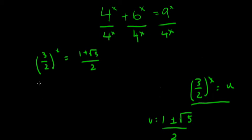Now we just have to solve for x. So taking the natural log of both sides, we get x times the natural log of 3 halves is equal to the natural log of this thing. And all you have to do is divide the natural log of 3 halves to the other side, and you'll end up with this.